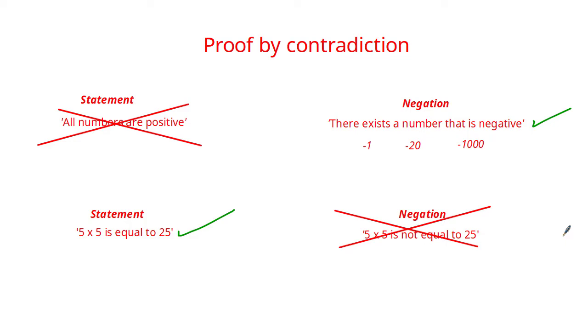We've used those two examples to give you a general idea of how we use the negation statement in proof by contradiction. The method is to use the negation to prove or disprove the original statement. In proof by contradiction questions, you generally need to prove the original statement by working out that the negation isn't true or gives you a contradiction. Let's look at the four simple steps — we call it the NAC method.